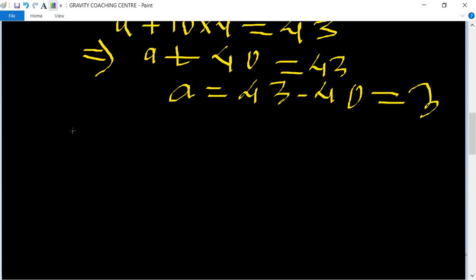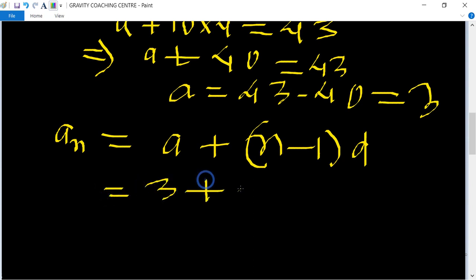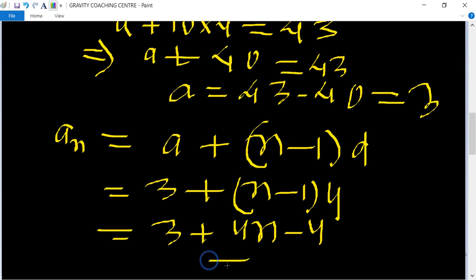We know that the formula for the nth term is an = a + (n - 1)d. Now we put the value of a and d. The value of a is 3 and d equals 4. This equals 3 + 4(n - 1) = 4n - 1, which is the required answer.